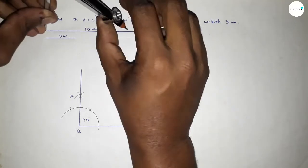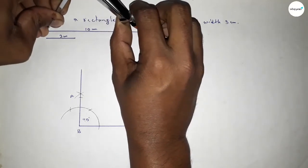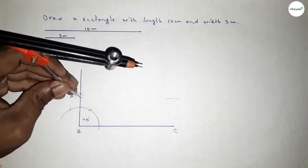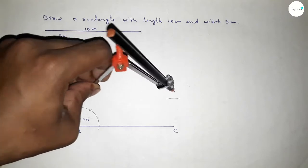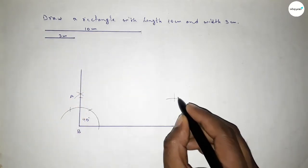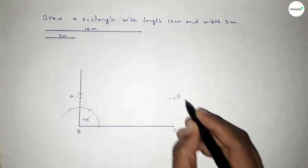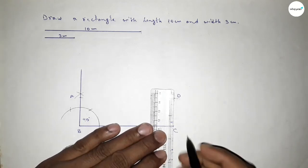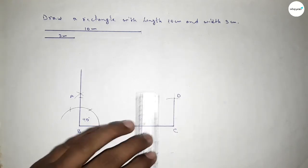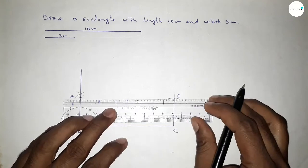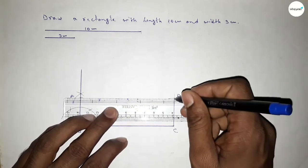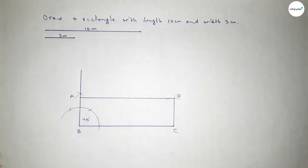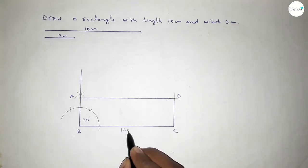Now taking the length 10 centimeter using the compass and putting the compass here to cut an arc. Both curves intersect at point D. Now joining C and D first, then joining A and D.